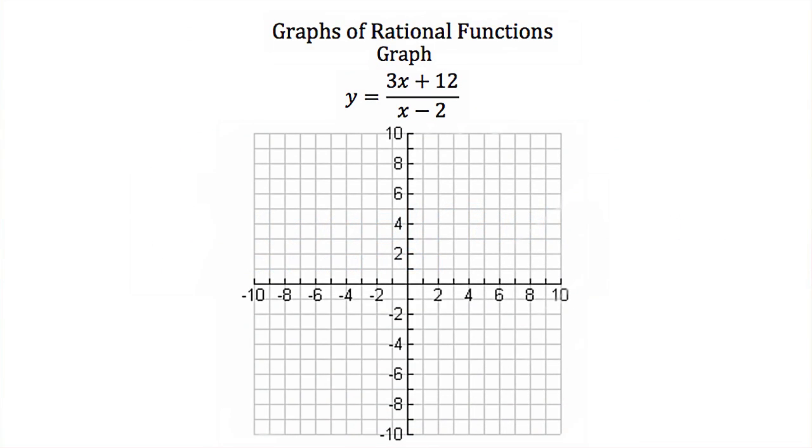So now let's try using all this information to graph our own rational function. Here we're told to graph y equals 3x plus 12 all over x minus 2. The first step to graphing this is to try to find all of our asymptotes.